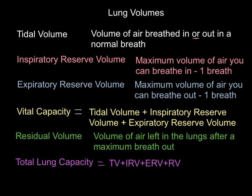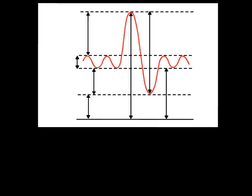Now what we've got to be able to do is label them on a spirometer trace and see what happens to them during exercise. This is a spirometer trace, if you've never seen one before — hopefully you have in textbooks. This red line is a pattern of breathing. So this person has breathed in, breathed out, breathed in, breathed out, taken a big deep breath in, and then forced everything out of their lungs, then normal breath in and out, in and out. So what we've got to do is be able to label it.